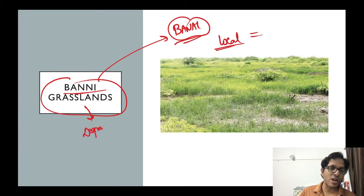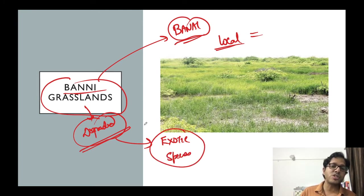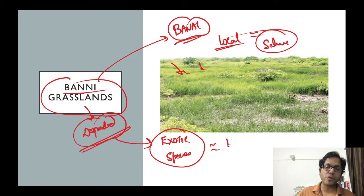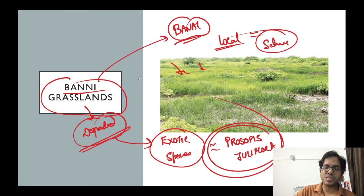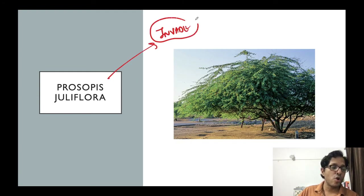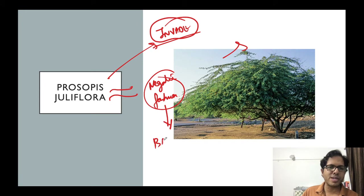But these Banni Grasslands got degraded, and to save them from degradation, an exotic species was introduced from outside - Prosopis juliflora. UPSC has already asked this question. This is an exotic species brought from outside. But this species invaded the area - it was brought to create balance, but instead it pushed out the local grasses. In short, Prosopis juliflora has acted in a negative fashion. It is also called 'Gandha Babool' by the locals. This is a classical example where an exotic species was brought and became invasive.